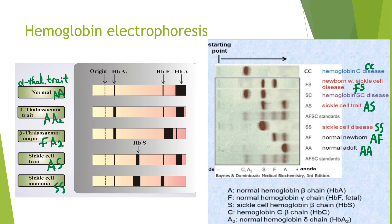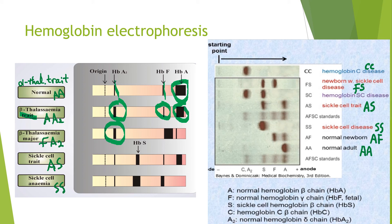Looking at real hemoglobin electrophoresis strips: the first strip shows mainly hemoglobin A with very faint bands in the hemoglobin F and A2 zones — this is normal, and can also be seen in alpha thalassemia trait. The second strip shows mainly hemoglobin A with increased hemoglobin A2, with or without increased hemoglobin F — this is beta thalassemia trait. Increased hemoglobin A2 is the hallmark of beta thalassemia, also seen in beta thalassemia major, but in major there is no hemoglobin A — only increased hemoglobin F.